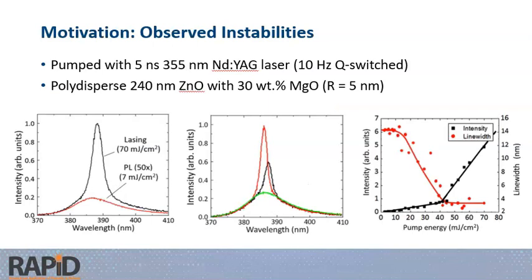Just to show you an example of some of these instabilities and what they look like, this set of graphs shows results from my group with five nanosecond pumping at 355 nanometers with an Nd:YAG laser. This is from a sample with polydisperse, on average 240 nanometer zinc oxide nanoparticles, and then we add in some magnesium oxide nanoparticles, very small nanoparticles with some defined weight concentration. When you do average measurements, you get something that looks like the graph on the left, above and below threshold. Above threshold you see what looks like a very wide band, low Q lasing peak. Below threshold you see the typical photoluminescence spectrum, magnified on this scale in the central graph.